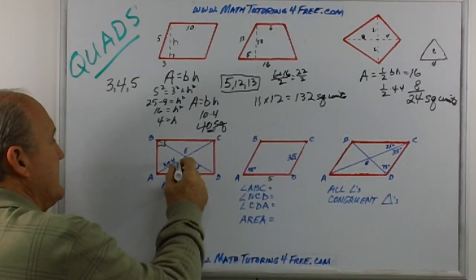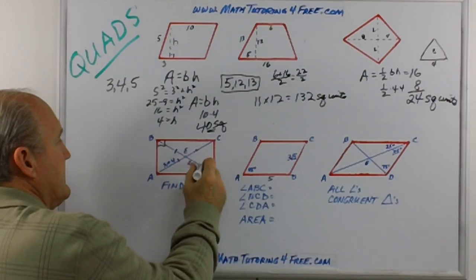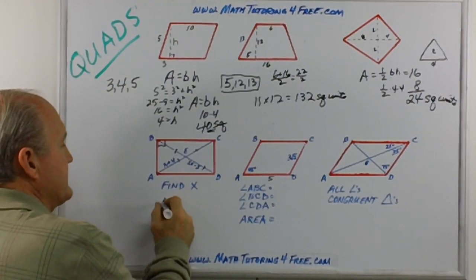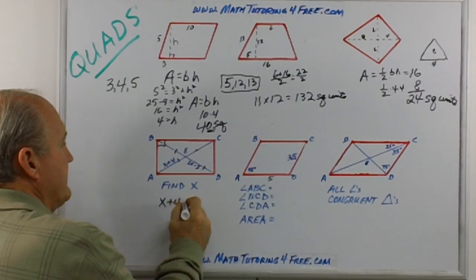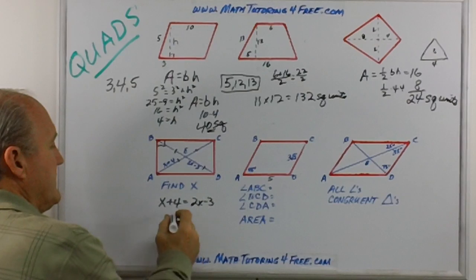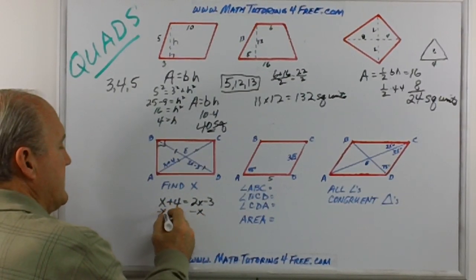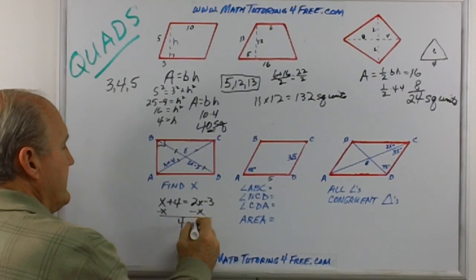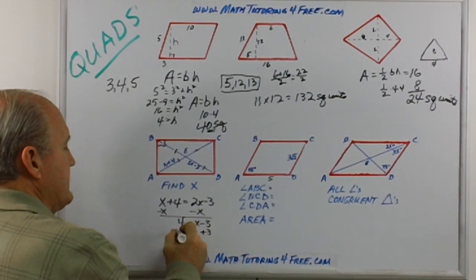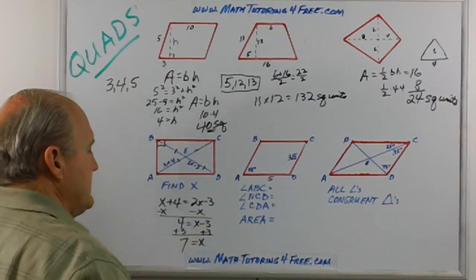So when you do that, you really are looking at four equal sections. So since these two are both equal, we can just set x plus four equal to two x minus three. Simple algebra from this point on. Subtract x from both sides, we get four is equal to x minus three. Add three to both sides, and we end up with x is equal to seven.